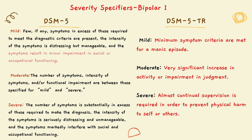Another change involves the severity specifier for Bipolar 1 disorder. In DSM-5, the severity specifiers for mania — mild, moderate, and severe — were not cohesive with mania's symptoms, since descriptions like 'minor impairment in functioning' conflicted with mania's requirement of significant disruption. The updated specifiers now state: mild means minimum symptom criteria for a manic episode are met; moderate means very significant increase in activity or impairment in judgment; and severe means almost continuous supervision is required to prevent physical harm.